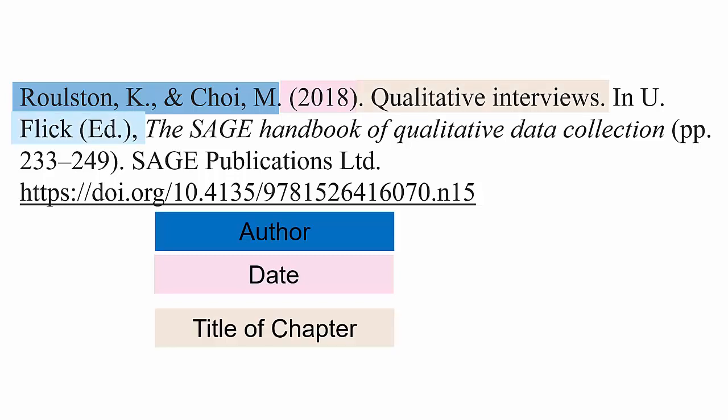Book chapters are structured like article titles — only the first word, proper nouns, and words following a colon, semicolon, or period are capitalized. This is followed by the word 'In,' capitalized. Then the editor's first initial, period, and middle initial, period, if provided, followed by their last name. Then in parentheses is 'Ed.' for a single editor, or 'Eds.' for multiple editors.